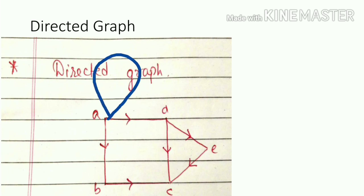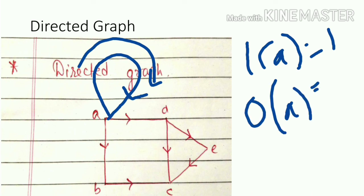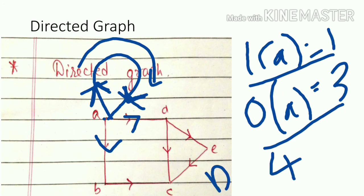Now there is a loop on the directed graph with a clockwise direction. For incoming, there is 1 incoming edge. For outgoing, there are edges 1 and 2, and the loop also counts as outgoing, so the out-degree is 3. Since a loop is considered as 2, the total degree of vertex A is 4. This is the way to find the degree of vertex in undirected and directed graphs.